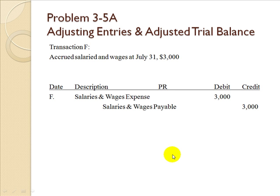In Transaction F, accrued salaries and wages at July 31st were $3,000. This generally indicates the pay period is split between months or even years. We record the expense to the period it belongs to and hold it as a payable until the end of the pay period. We debit salaries and wages expense $3,000 and credit salaries and wages payable $3,000, then pay out the total payroll — including the accrued payable — at the end of the pay period.